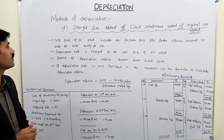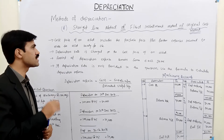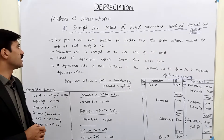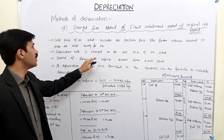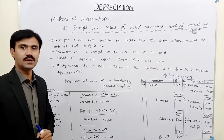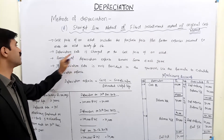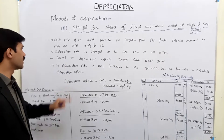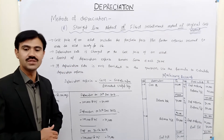Cost price of an asset includes the purchase price plus further expenses incurred to make the asset ready for use. Depreciation rate and depreciation expense are both charged on the cost price of the asset.